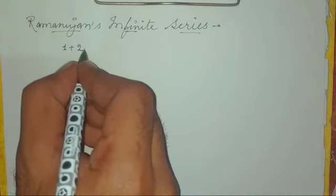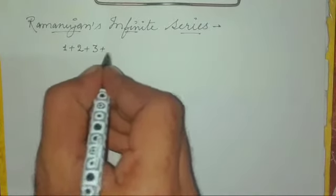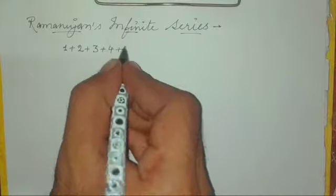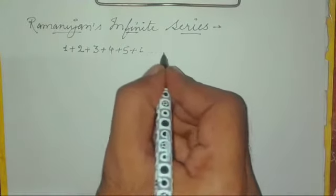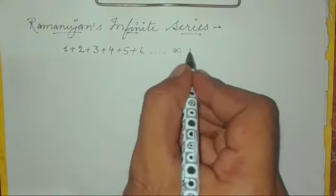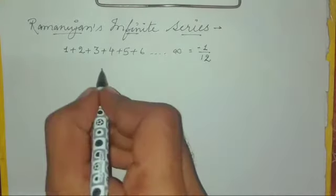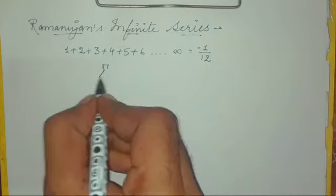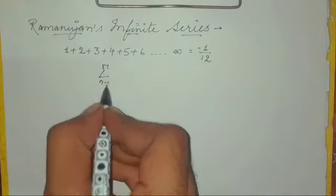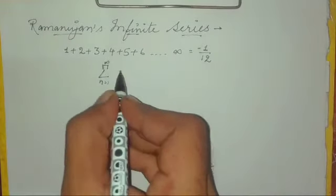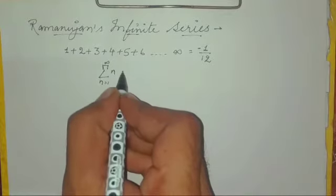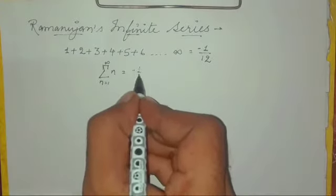How can it be possible that 1 plus 2 plus 3 plus 4 plus 5 plus 6 till infinity will give you minus 1 over 12? That is, summation of all positive numbers from 1 to infinity is equal to minus 1 by 12.